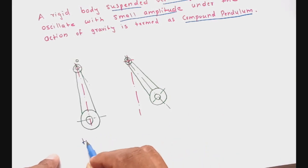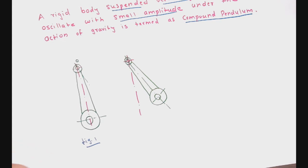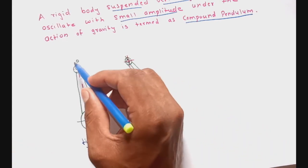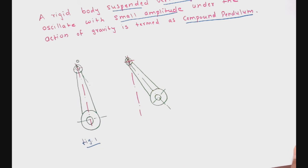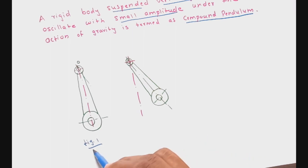Here in figure 1, I have shown a connecting rod suspended vertically at the pivot point O in the vertical plane. The connecting rod is shown in its mean position. When no forces are acting on the connecting rod, it will be in equilibrium position at rest in the vertical plane as shown in figure 1.